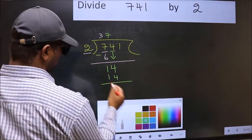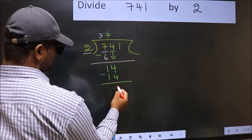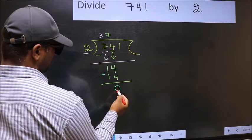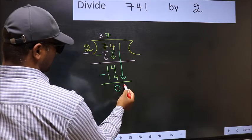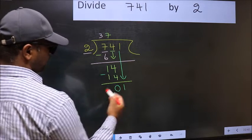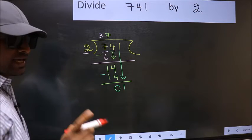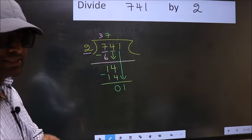Now you should subtract. 14-14, 0. After this, you should bring down the beside number. So 1 down. After this step, the mistake happens.